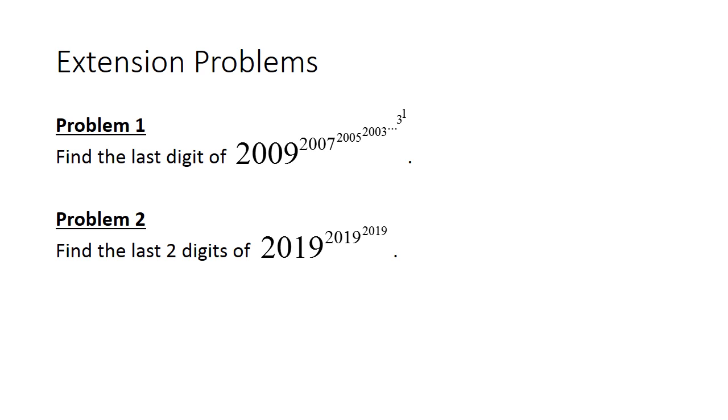So here are some extension problems that you can try out that are similar to today's problems. Problem number 1: Find the last digit of 2009 to the power of 2007 to the power of 2005 to the power of 2003 and keep doing that until you reach to the power of 3 to the power of 1. Problem number 2: Find the last two digits of 2019 to the power of 2019 to the power of 2019. I will be posting a link to the full solution in the info section below in a few days time.